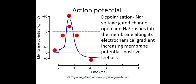Resting potential is established and maintained using the sodium-potassium pump, which we looked at in the first video. Now once there's some kind of stimulus in the nerve, if this stimulus causes the membrane's potential to go above the threshold value, an action potential will be generated.